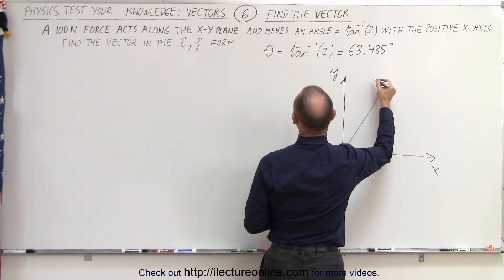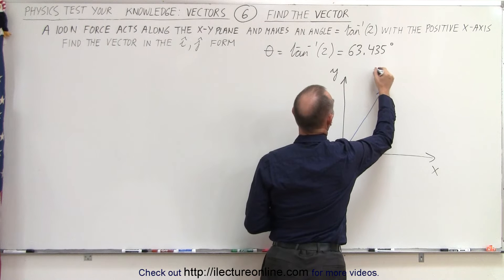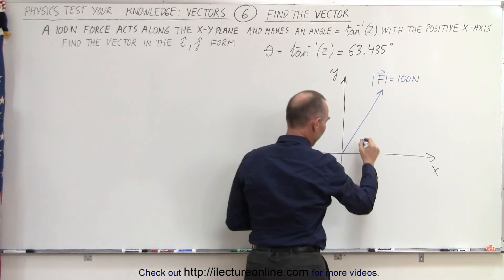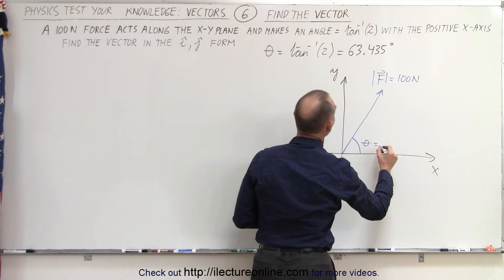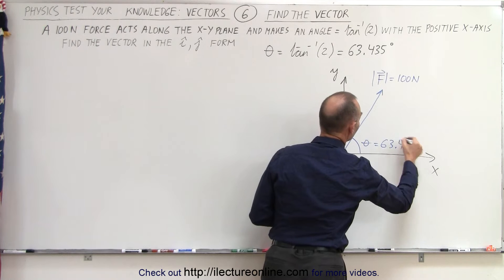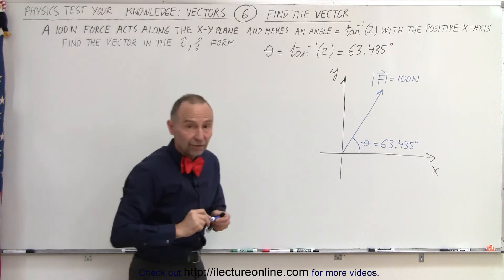Let's say that's the vector F and the magnitude of the vector is equal to 100 Newtons. And we make an angle of theta, which is equal to 63.435 degrees with respect to the positive X-axis.